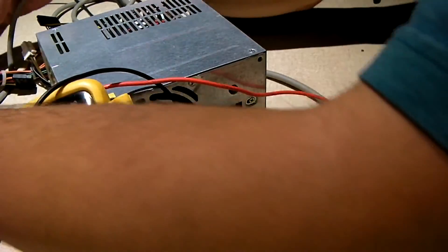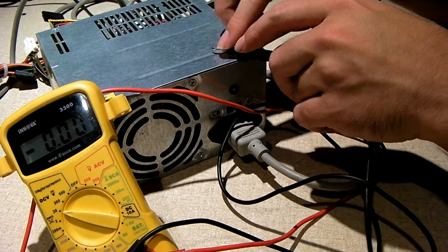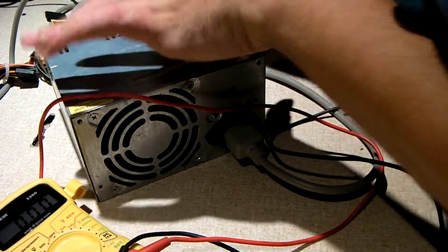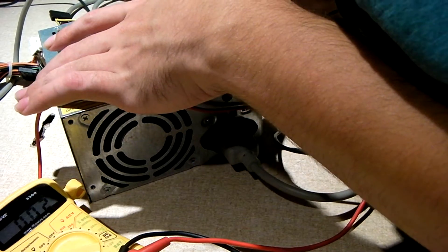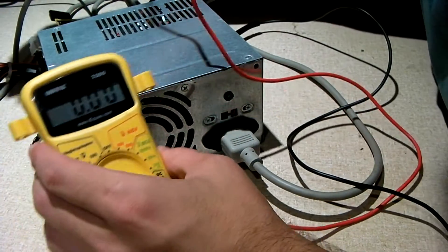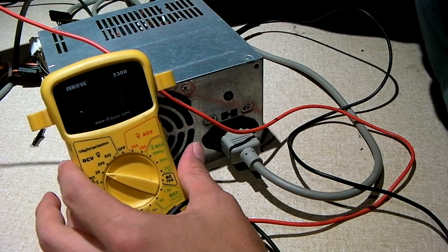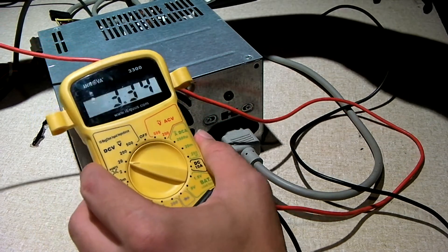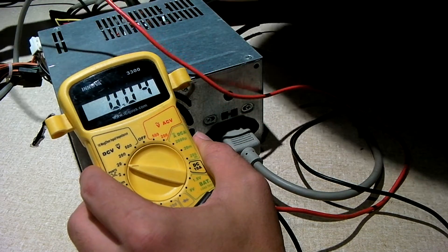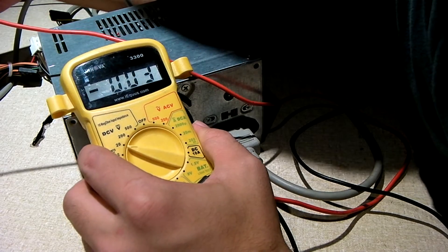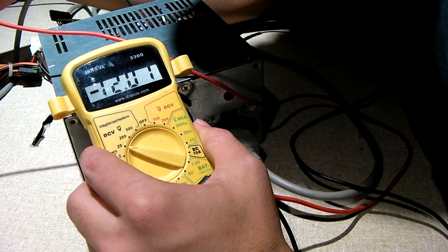Check our voltages. Again, just like last time. Orange wire gives us 3.3. Red is 5 volts.